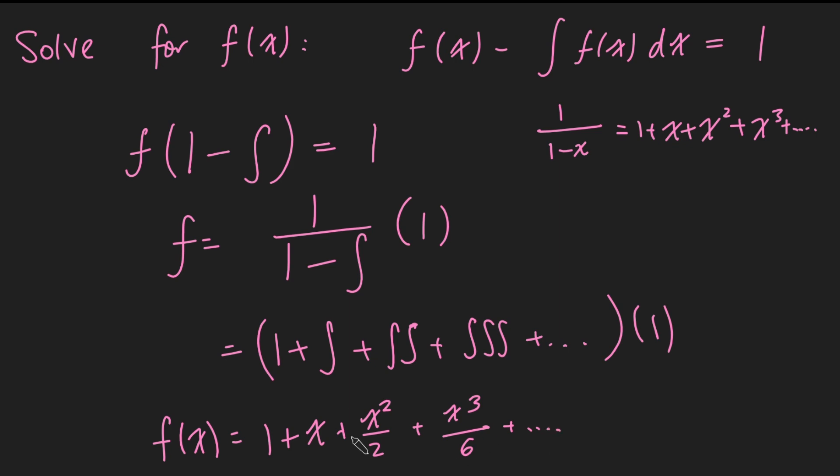This hopefully looks familiar, this is just the Taylor expansion for e to the x. So we get f(x) is e to the x. You can verify if you plug this in that e to the x minus the integral of e to the x is a constant, plus c, so as long as the constant is 1, this equation is certainly true.